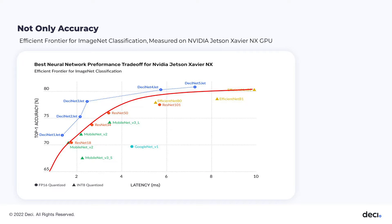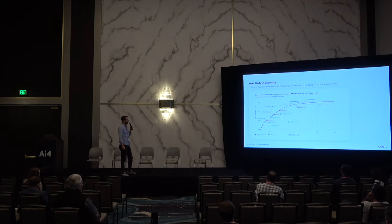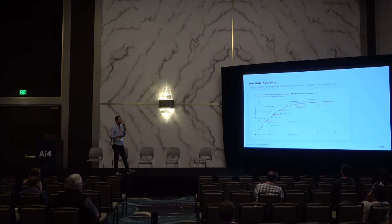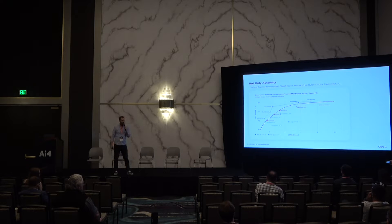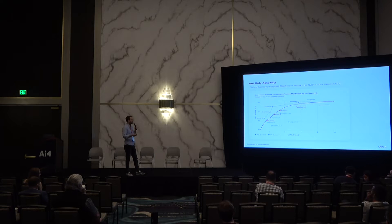Accuracy is not enough — we also need to think about latency. The common practice is to plot models on a grid where the y-axis is accuracy and the x-axis is latency on the target device. We don't measure FLOPs or any other approximator because it's not a good approximation for the performance we'll see in production. We use the actual latency of the target device.